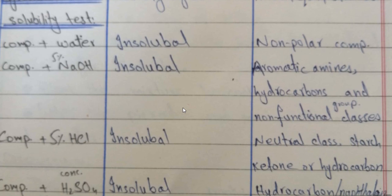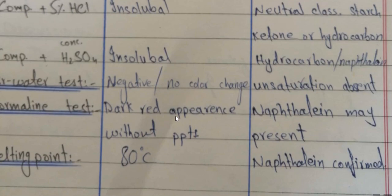Now we do solubility tests. We take the compound and add water in a test tube with a minute amount of compound — it is insoluble. We then add 5% sodium hydroxide — this will also be insoluble. Insoluble in sodium hydroxide means aromatic amines, hydrocarbons, or non-functional group classes may be present. We then test with sulfuric acid — Component A is also insoluble. This indicates hydrocarbons or similar neutral class compounds.